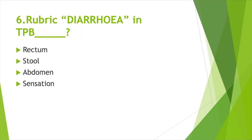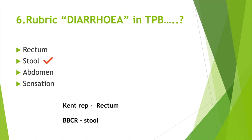The rubric 'diarrhea' in TPB (Therapeutic Pocket Book) is found under — Option A: Rectum, Option B: Stool, Option C: Abdomen, Option D: Sensation. Answer: Option B, Stool. In Kent's Repertory it is under Rectum; in BPCR it is under Stool.